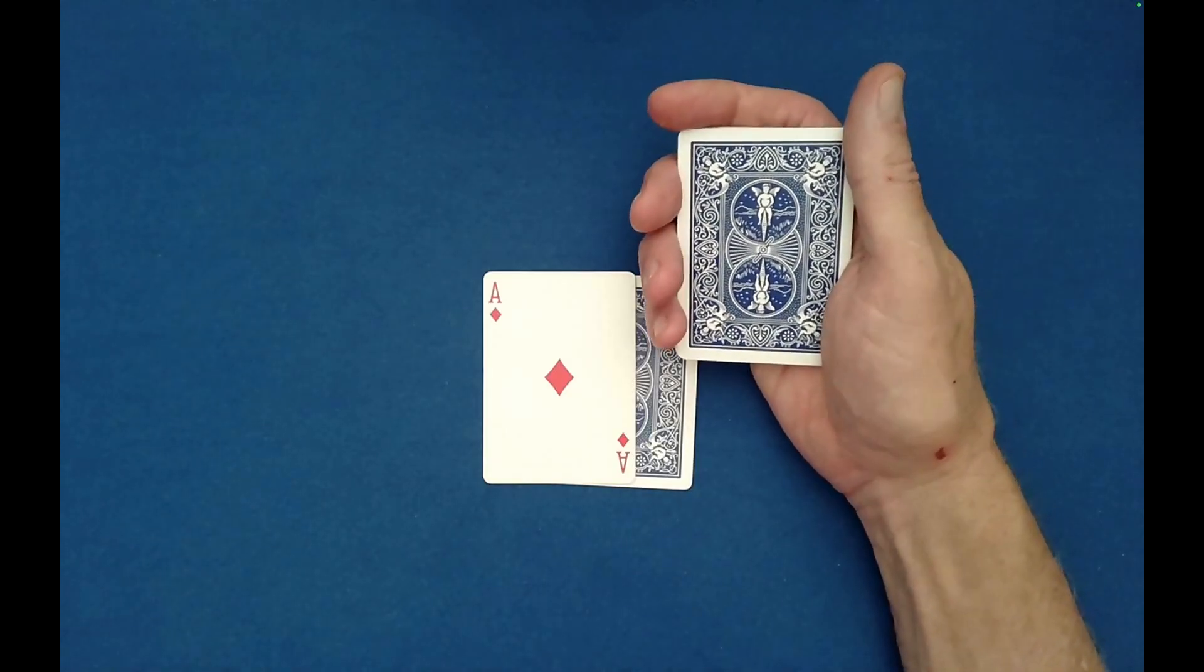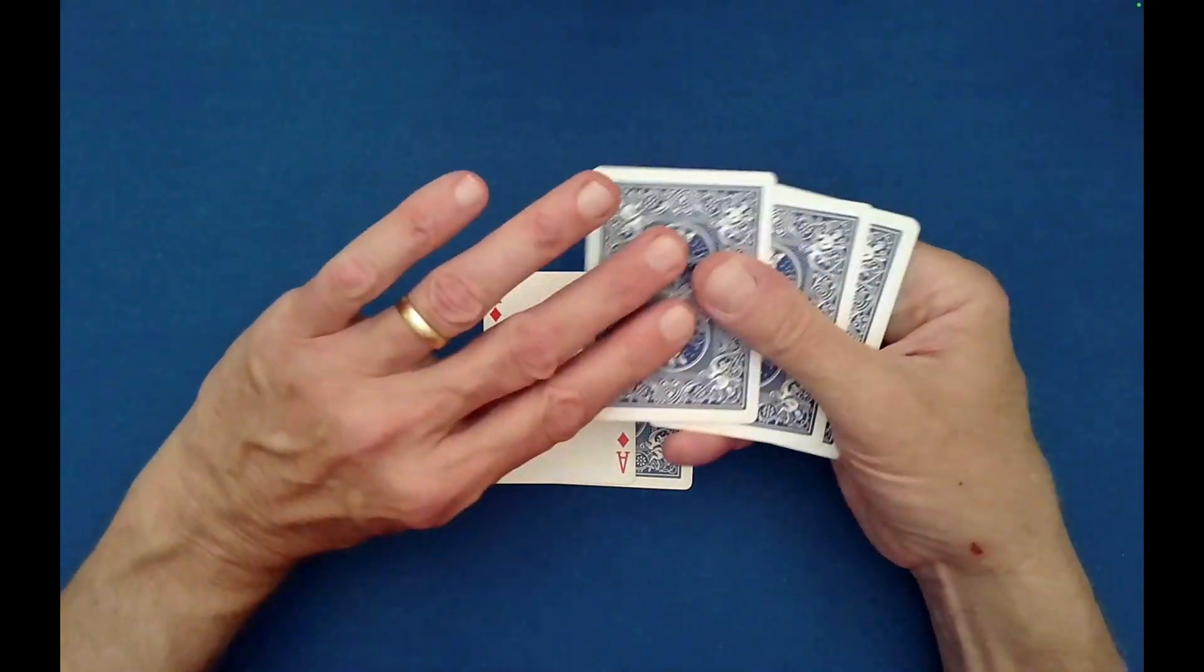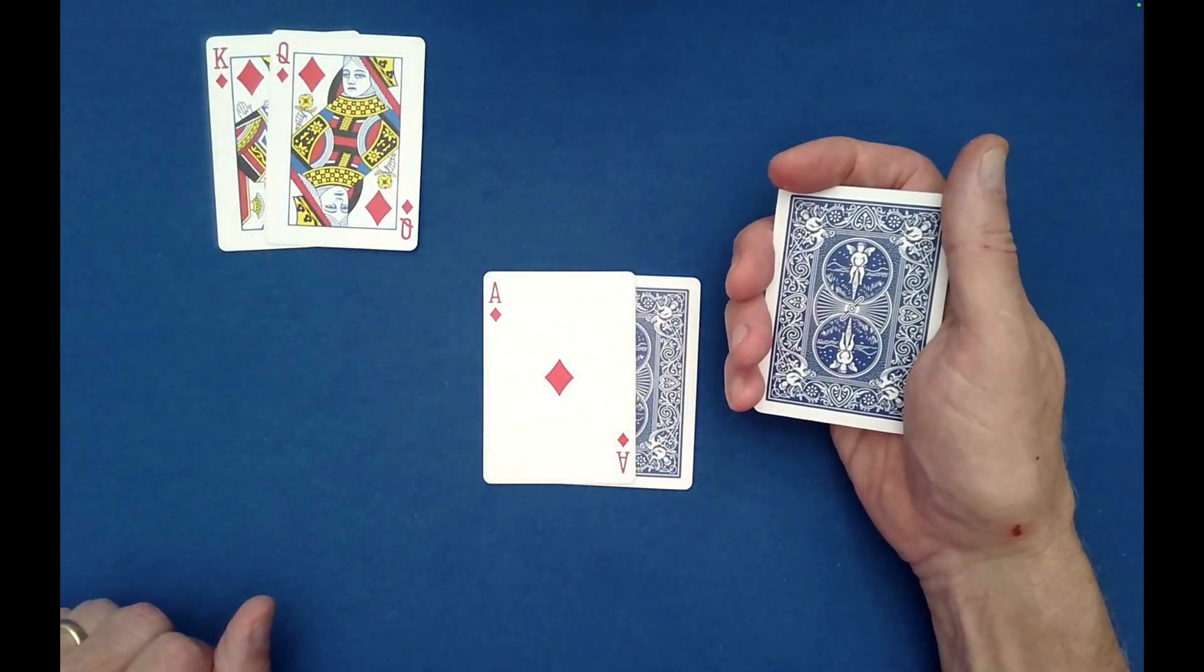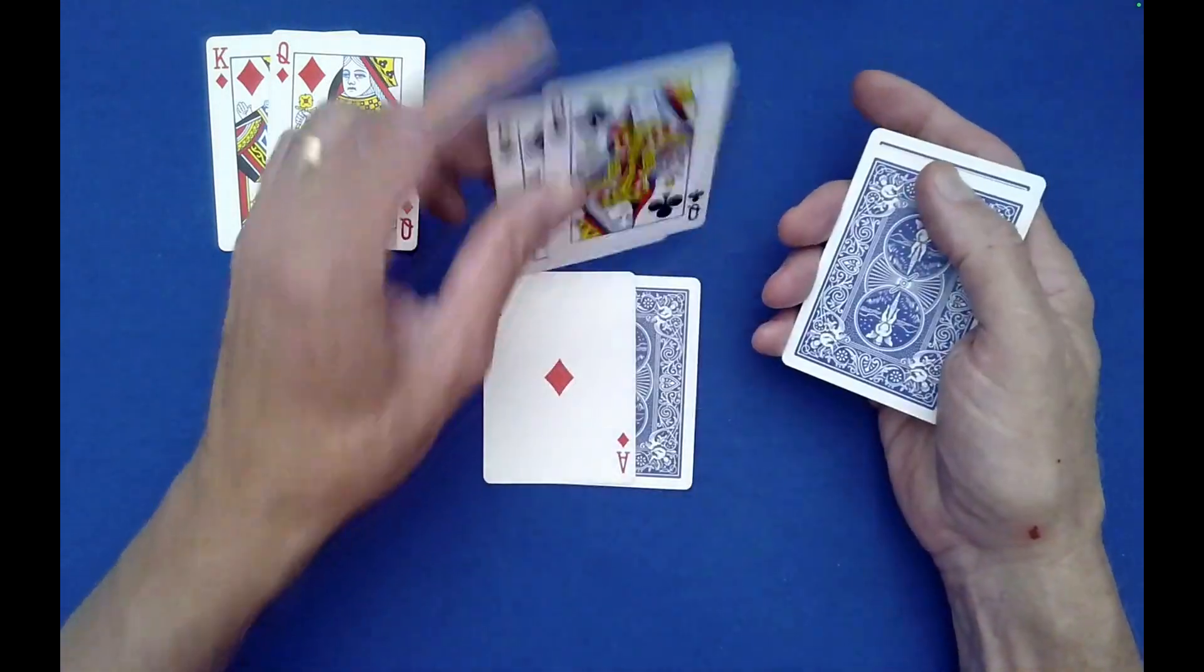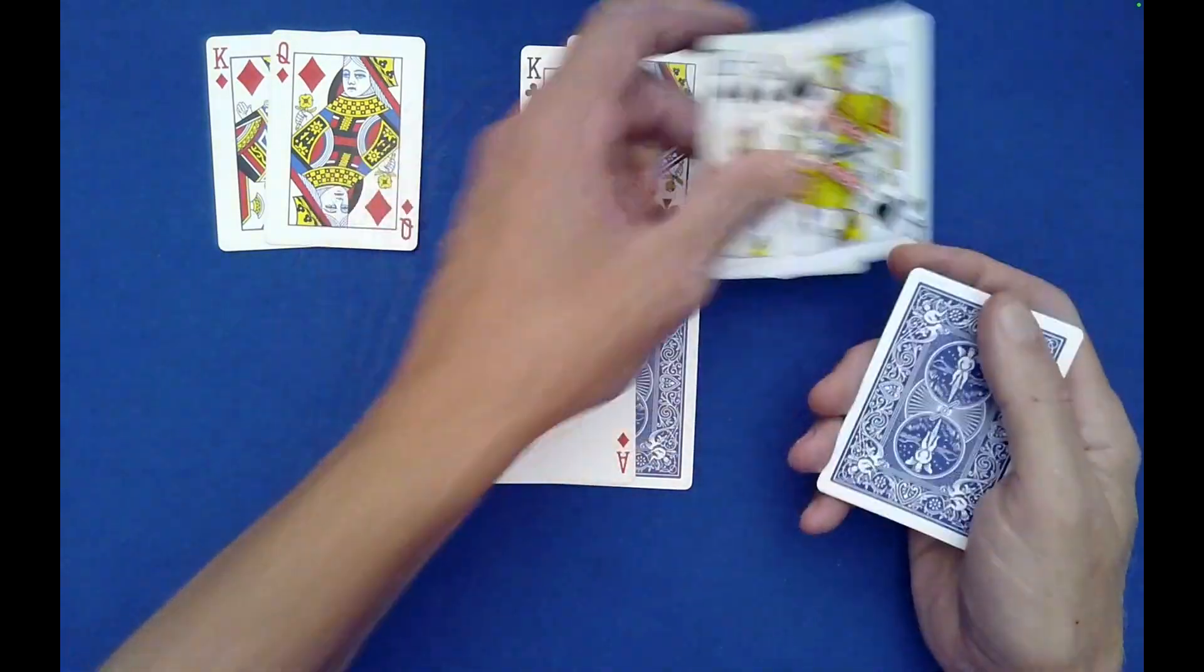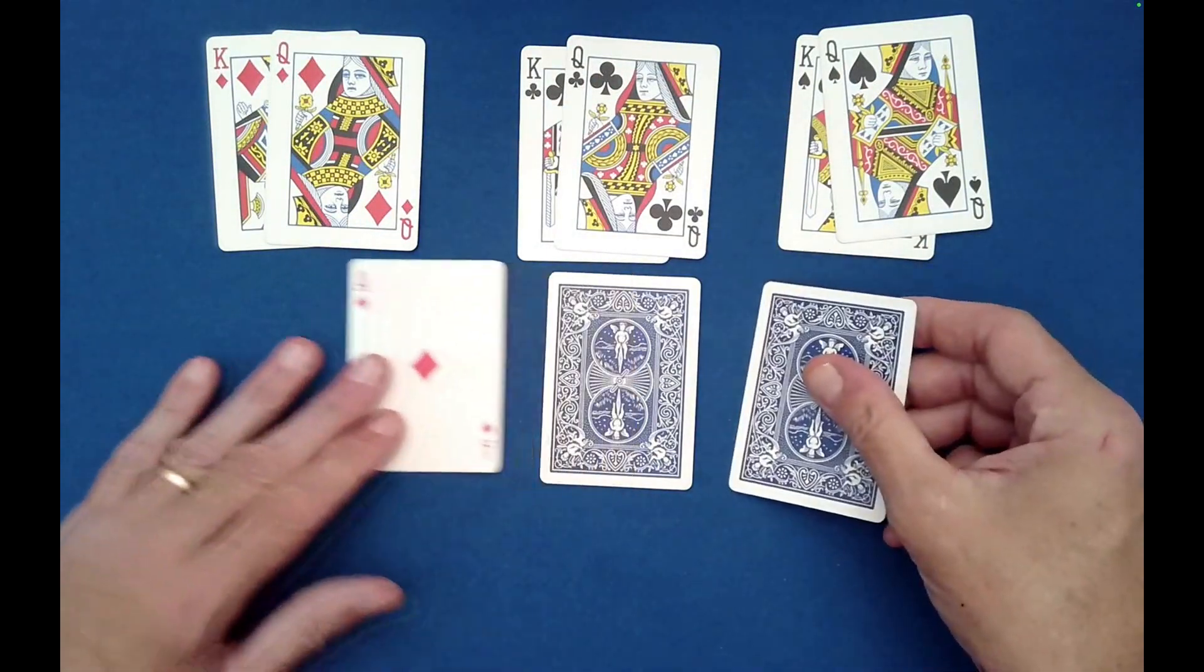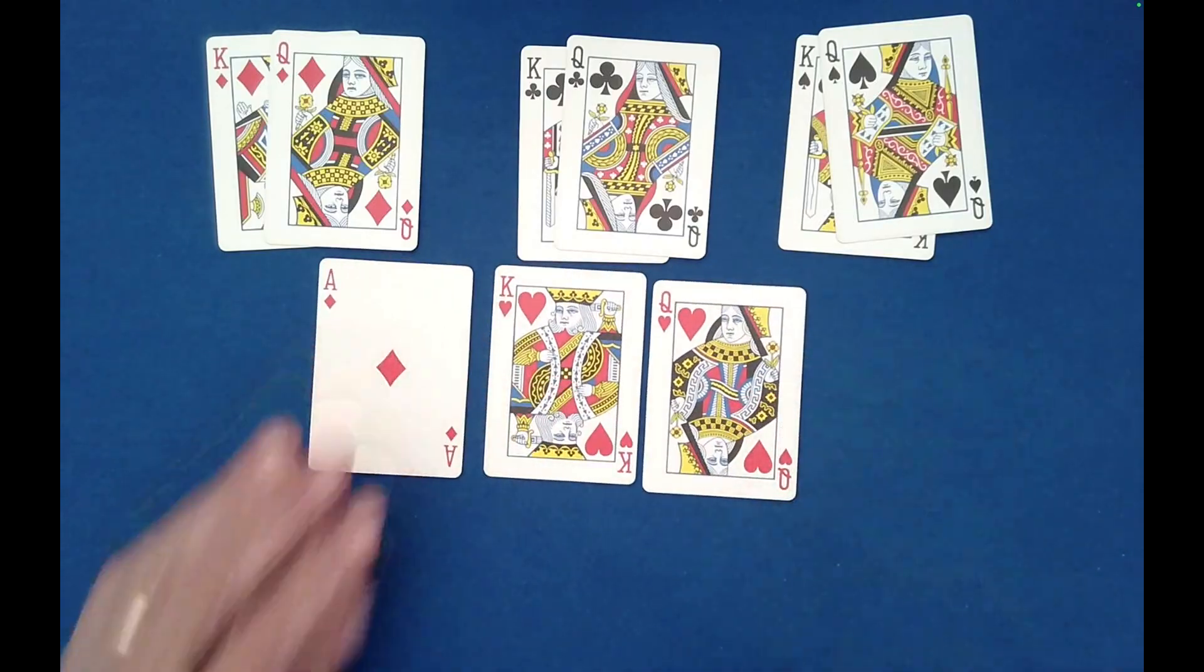So how are the cards going to tell us that? Well, just watch. I'm going to push off the first pairs and apparently you did not choose the hearts, nor did you choose the clubs, nor did you choose the spades. Well, there's only one possibility. You must have in fact chosen the diamonds, which is indeed the case.